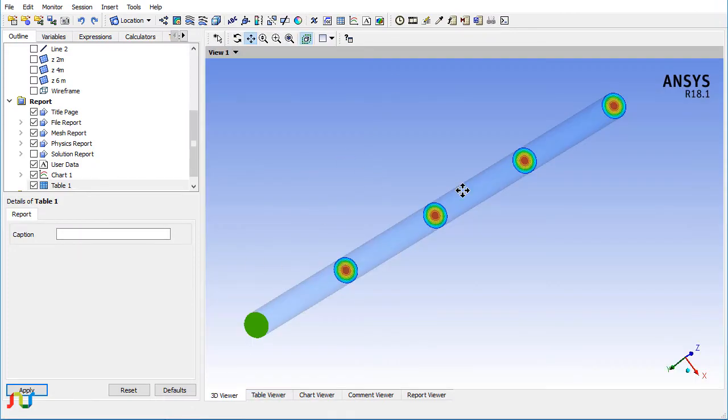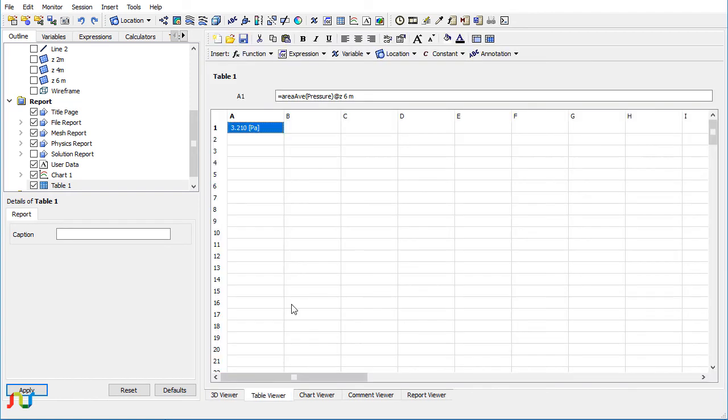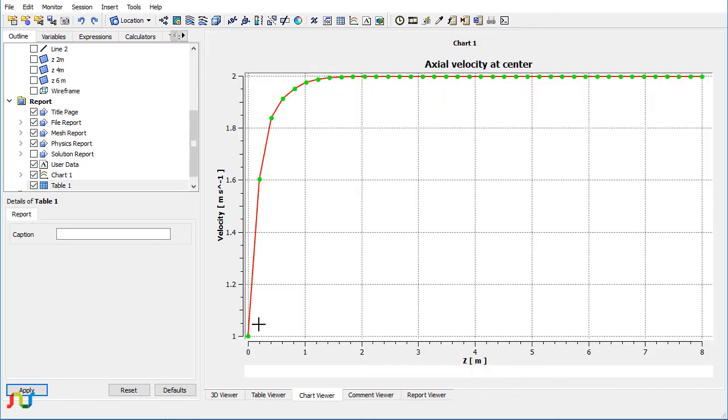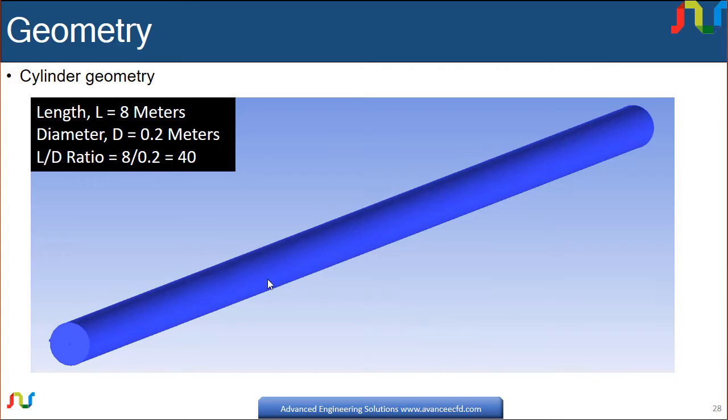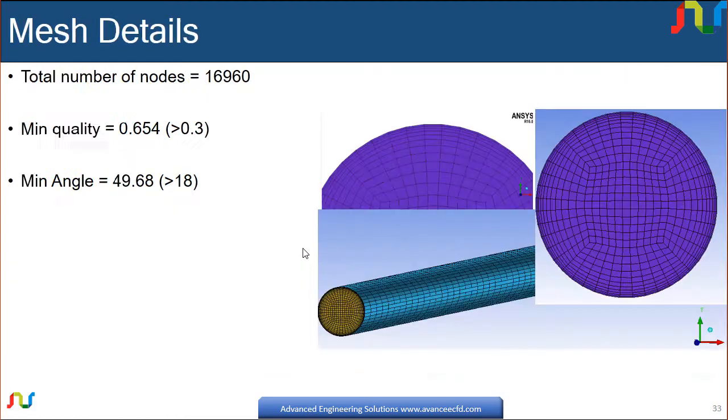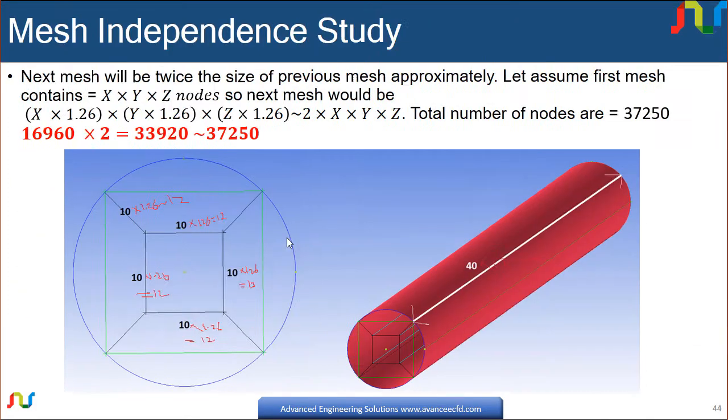Here we have the contour plots along different axial locations. Here we have the tabular values of the pressure at the sum plane. Here we have the axial velocity profile as you can see here, for example in the post section.